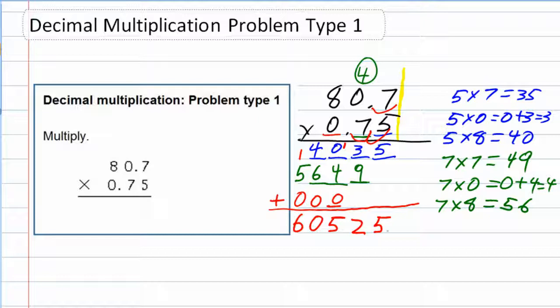So I need to move this decimal, which we would normally put at the back. I need to move it 1, 2, 3 times to out here. So our final answer would be 60.525.